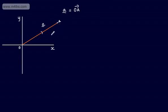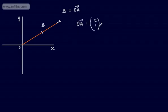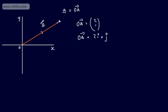Remember from previous studies, vectors have both magnitude and direction. Let's say this point was (2, 1). We could show OA in column form as (2, 1) — telling me to go across 2 and up 1. Alternatively, we can use I and J notation and write this as 2I plus 1J. These are simply unit vectors in the direction of X for I and the direction of Y for J. I generally prefer working with the column form, but sometimes you'll have to work with I and J notation.